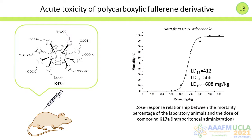Acute toxicity of one of the most promising compounds, which inhibited herpes simplex virus with a selectivity index of more than 40,000, was comparable to the acute toxicity of the common drug aspirin. LD100 in mice for this compound was about 600 mg/kg. Thus, the synthesized water-soluble fullerene derivatives demonstrated low acute toxicity and low cytotoxicity, together with high antiviral and antitumor activity, making them promising candidates for the development of novel fullerene-based drugs.